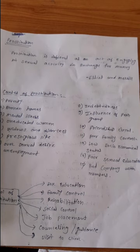Social control means if the individual acts according to social norms, social discipline, social norms, and ethics, then that is social control. Next is job placement — if anyone has a satisfactory job, then they will not do any different thing like crime or prostitution.